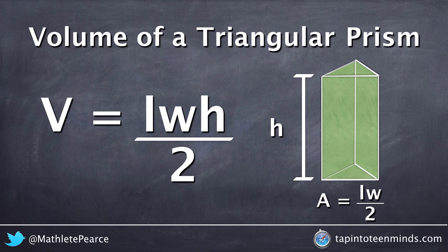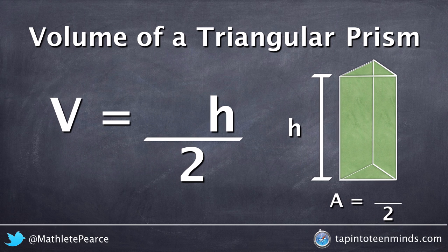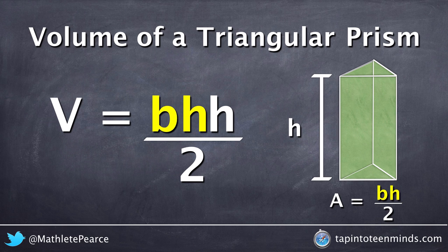Since many mathematicians typically define the area of a triangle as the base of the triangle times the height of the triangle divided by two, we could write the formula as the base times the height times the height of the prism divided by two.